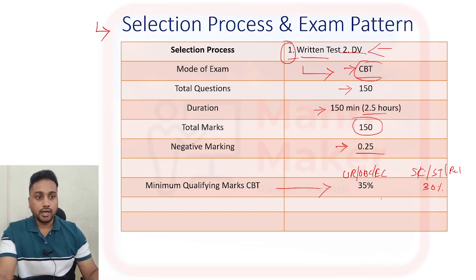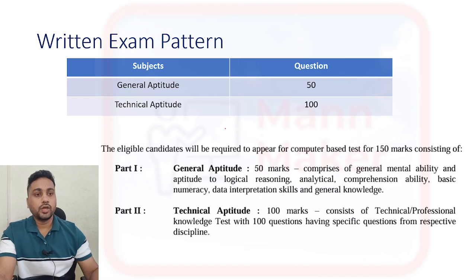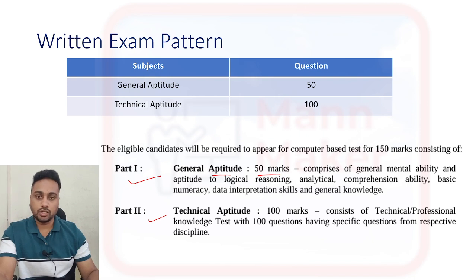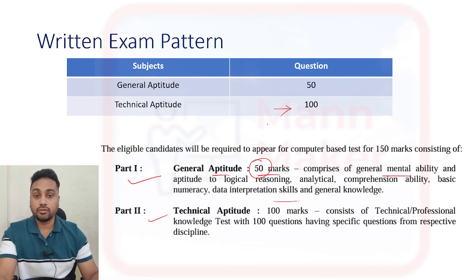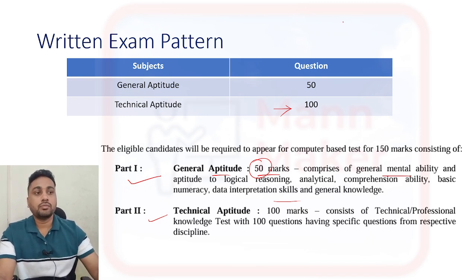There are two parts to the exam. Part one is General Aptitude, covering mental ability, general aptitude, reasoning, English, and data interpretation — 50 questions total from this section. Part two is Technical Aptitude with 100 questions, whether you are from ITI or diploma background, EAT or ITI Technician.